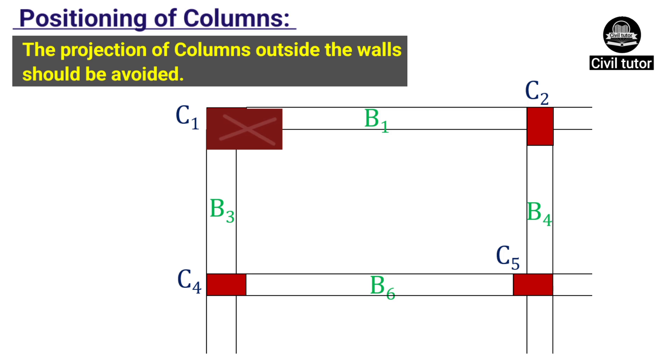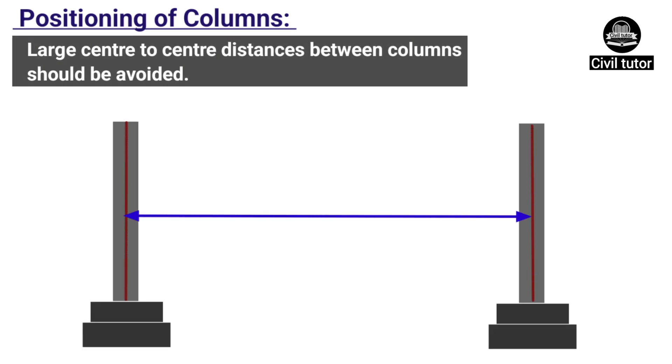Therefore, whenever possible, the depth of a column should be contained within the plane of the wall, but a minimum column depth of 200 mm should always be maintained as per IS code. Large center-to-center distances between columns should be avoided in order to eliminate the need for a wider cross-section of the columns.